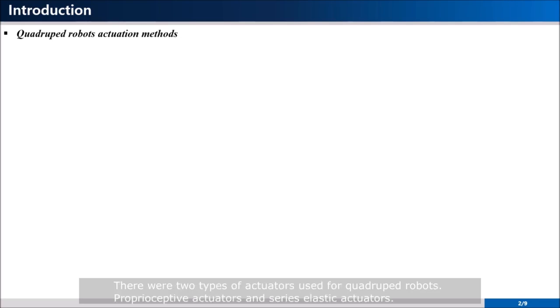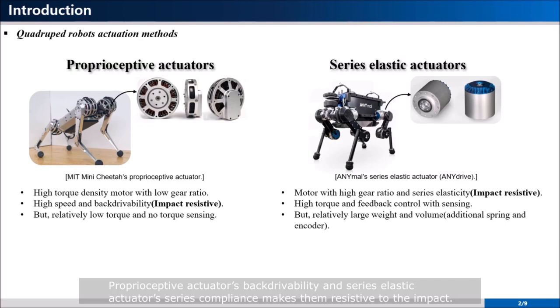There were two types of actuators used for quadruped robots: proprioceptive actuators and series elastic actuators. Proprioceptive actuators' backdrivability and series elastic actuators' serious compliance makes them resistive to the impact. However, they only have single axis compliance, so other control techniques are required.